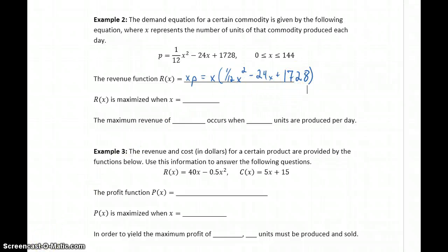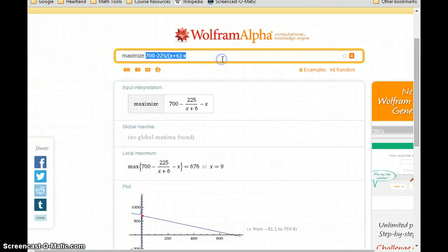So, we'll use Wolfram Alpha to maximize our revenue function, in this case, over that given domain. In this case, we want to maximize x times 112, x squared, minus 24x, plus 1728, for 0 is less than or equal to x, is less than or equal to 144, that given restricted domain.